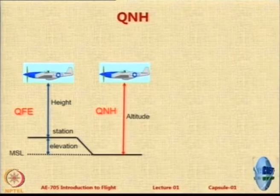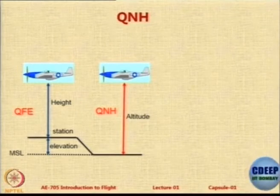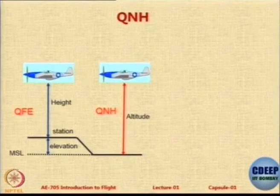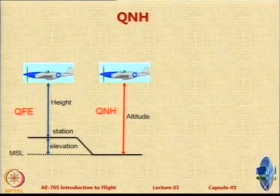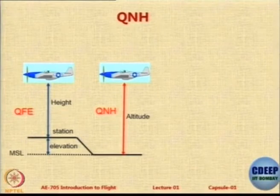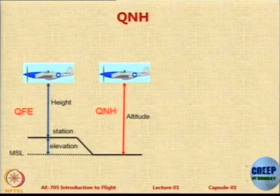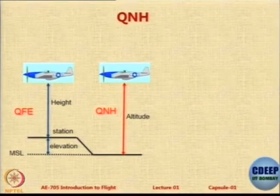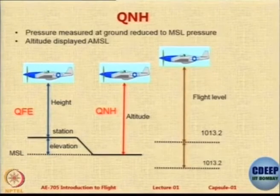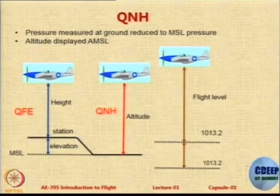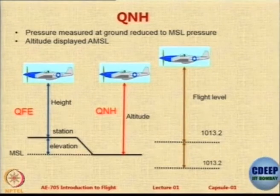Then there is QNH, which is the altitude from the location plus the height of that location above mean sea level. For example, Mumbai is 14 meters above mean sea level, and let's say I am at Khandala which has some height — QFE over Khandala is measured directly above Khandala, and QNH is from the mean sea level. Remember, mean sea level also changes from place to place, so QNH is location-specific. QNH at Mumbai and QNH at Pune can be different.